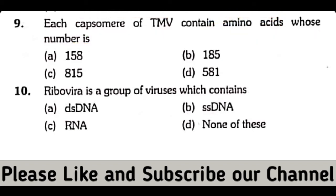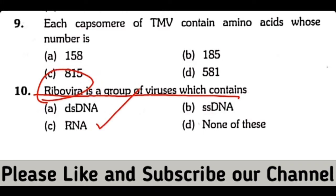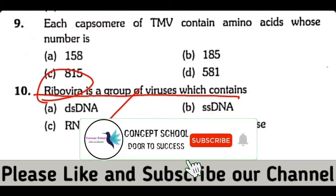Question number 10. Ribovira is a group of viruses which contain double-stranded DNA, single-stranded DNA, RNA, or none. So the correct answer is option C. Ribovira جو ہے وہ ایسے viruses ہیں جن کے اندر RNA present ہوتا ہے. اگر آپ اس چینل پر نئے ہیں تو پلیز چینل کو لائک کریں اور سبسکرائب بھی کر دیں.